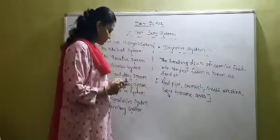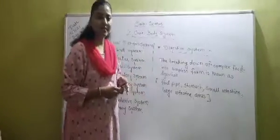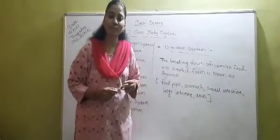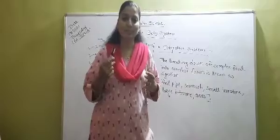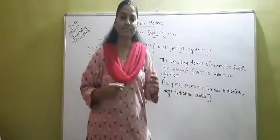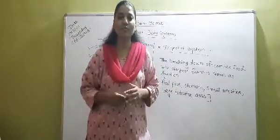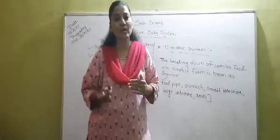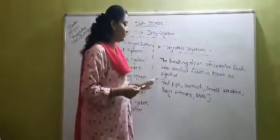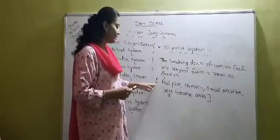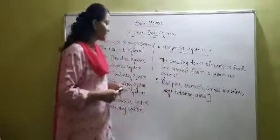Once again, let me repeat it. In the digestive system, the food that we have eaten passes through the food pipe and then enters into the stomach. In the stomach, the complex food is broken down into simpler form and the process of digestion completes there. After that, the unwanted food is expelled through the anus. The main parts of the digestive system are: food pipe, stomach, small intestine, large intestine, and anus.